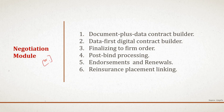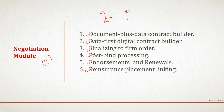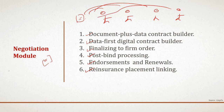The negotiation module helps brokers and underwriters to negotiate risk digitally. It contains many sub-processes including: document-plus-data contract builder, data-first digital contract builder, finalizing to firm order, post-bind processing, document and renewals, and reinsurance placement linking. This module supports rapid contract creation and efficient collaboration on negotiation of terms and conditions. It is accessible to the placing broker, lead underwriter, and the customer, so all parties can upload information into this common module for better and efficient placement.